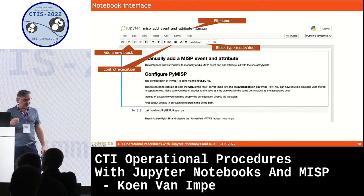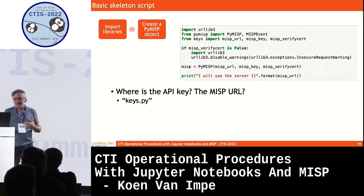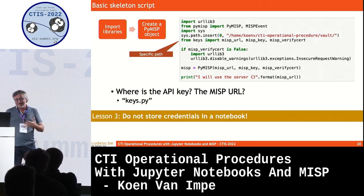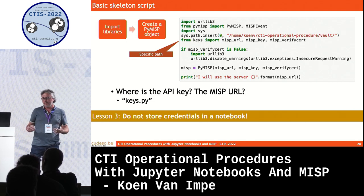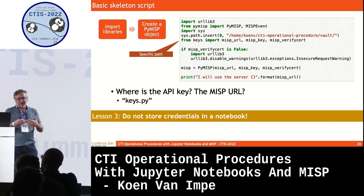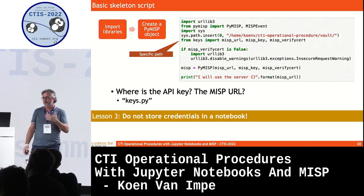You have buttons to add additional code or documentation blocks — a block can be either a code block or a documentation block — and buttons to control execution, restart, or stop. For creating operational procedures, I always start with a skeleton script that instantiates the libraries needed to access the MISP environment and starts a PyMISP object. Third lesson: do not store your MISP URL and API key credentials in your notebooks. Store them in a separate file and access that file from the skeleton script.